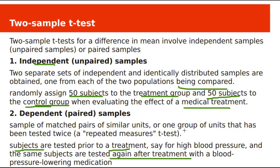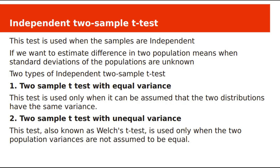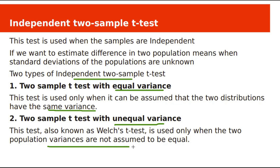We have different types of tests based on the sample. For the independent two sample t-test, if two samples are independent and standard deviations are unknown, we use this test. There are two types: the two sample t-test with equal variance, used when two population distributions have the same variance, and the two sample t-test with unequal variance, used when populations have different variances. The unequal variance test is also known as Welch's t-test.